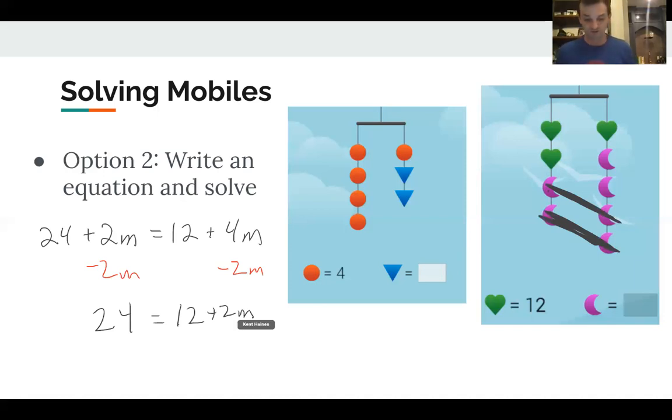And hopefully you can see we're going to end up getting the exact same answer that we got on the other side. 24 minus 12 is 12. That equals, that should be minus 12, 2m. So if we divide both sides by two, we get m is equal to six. So we know the moon has a weight of six.